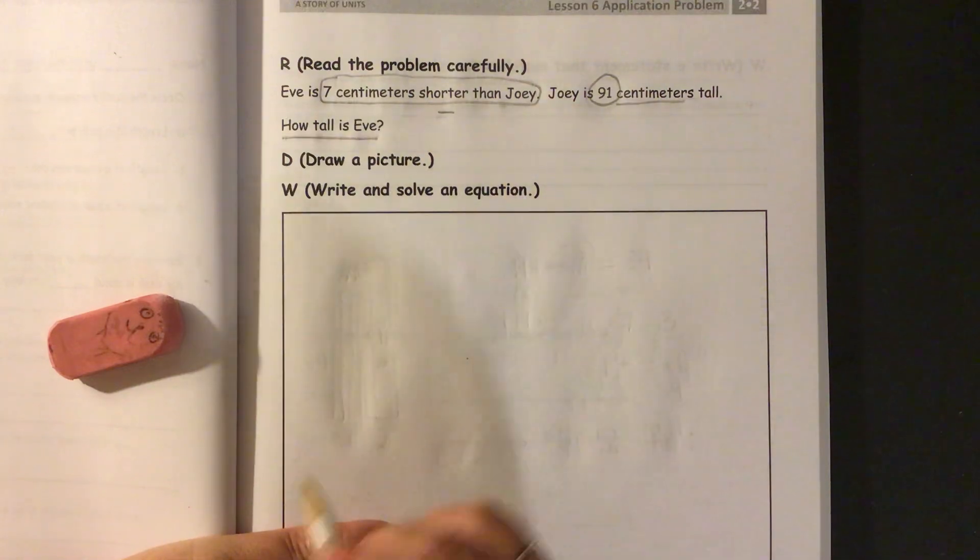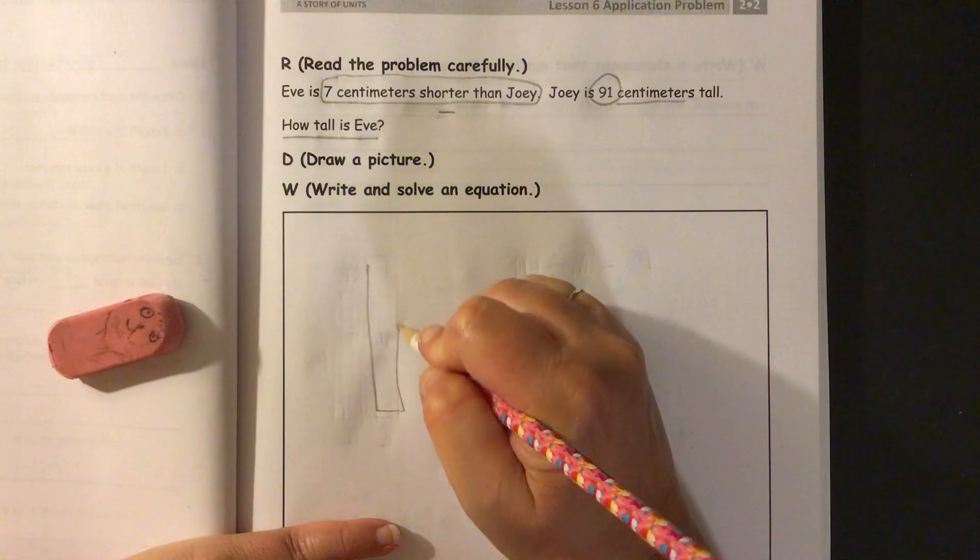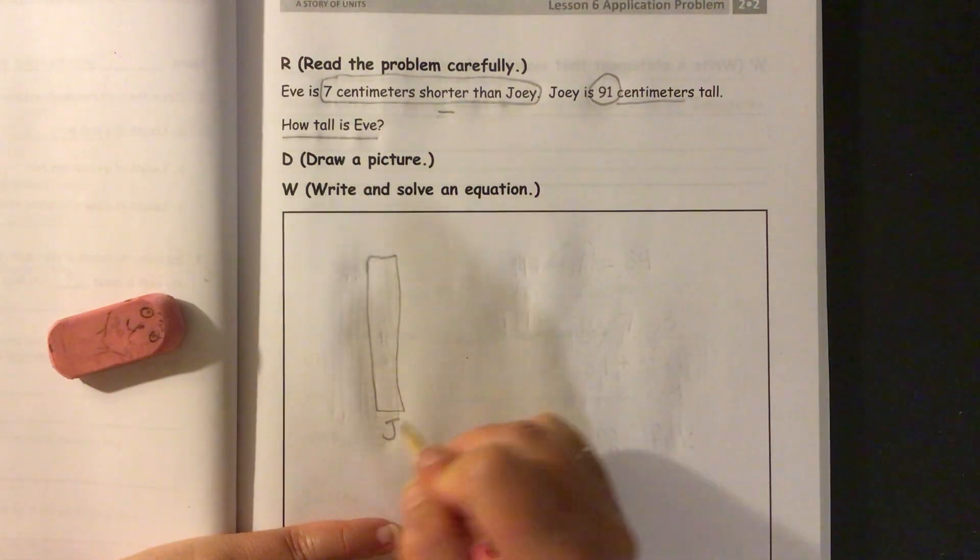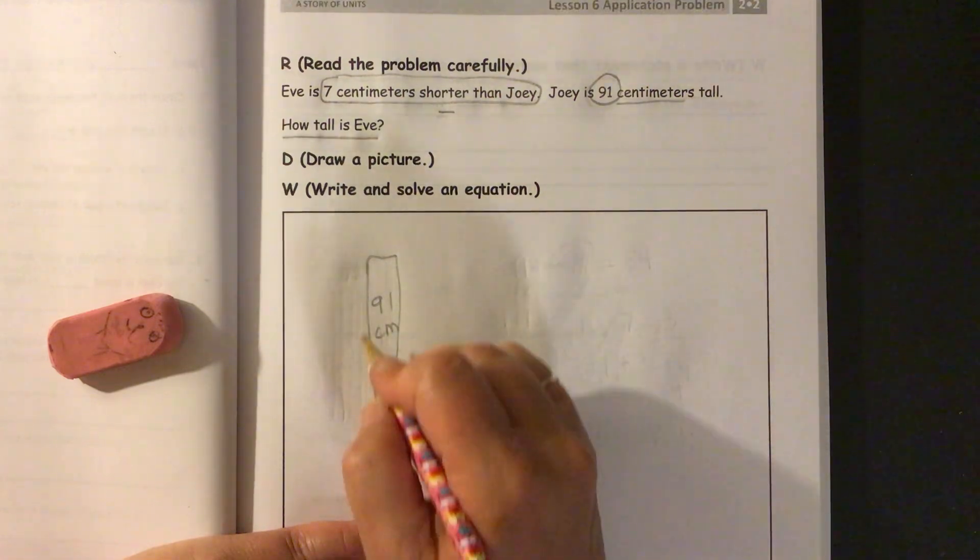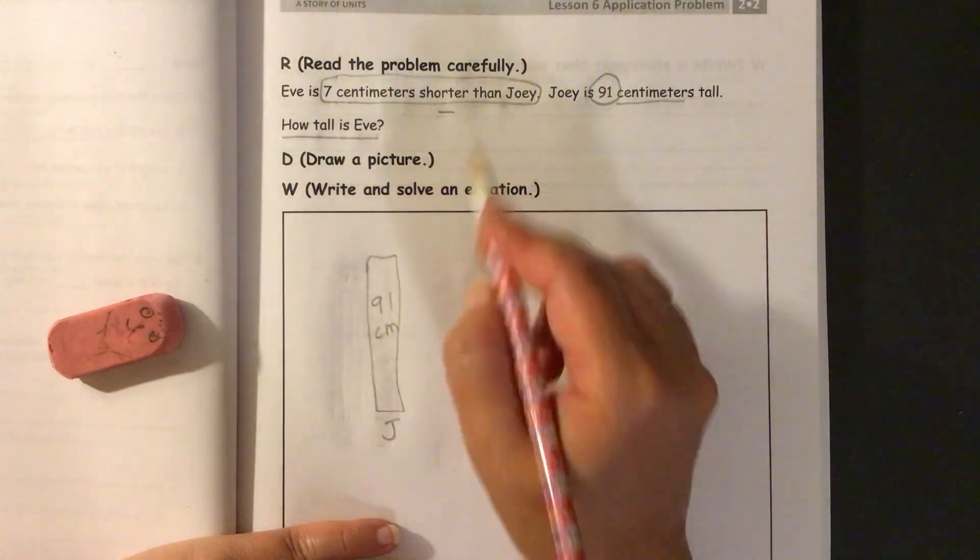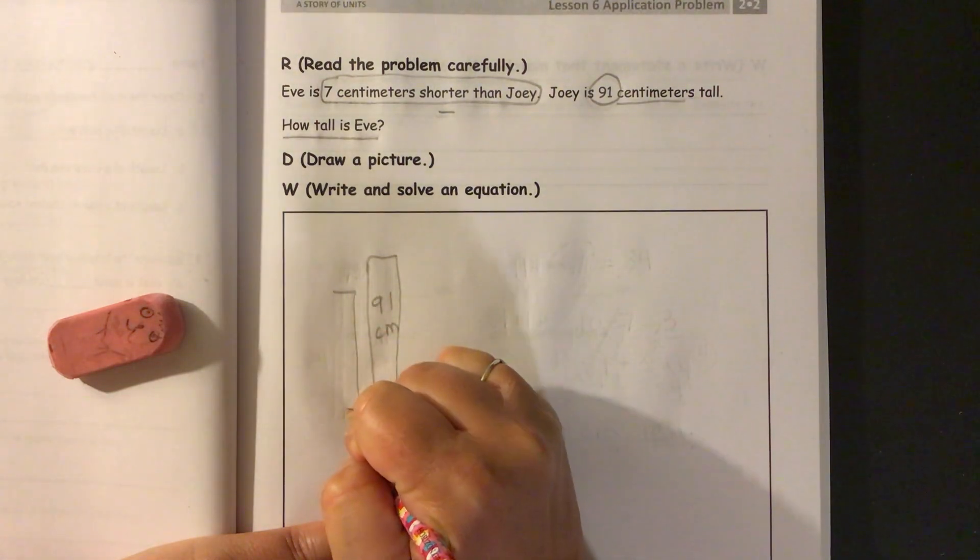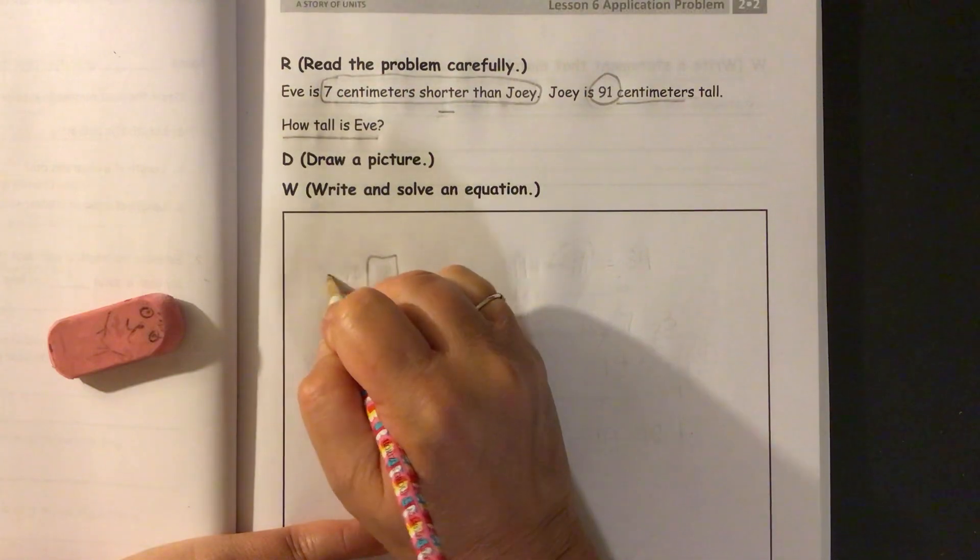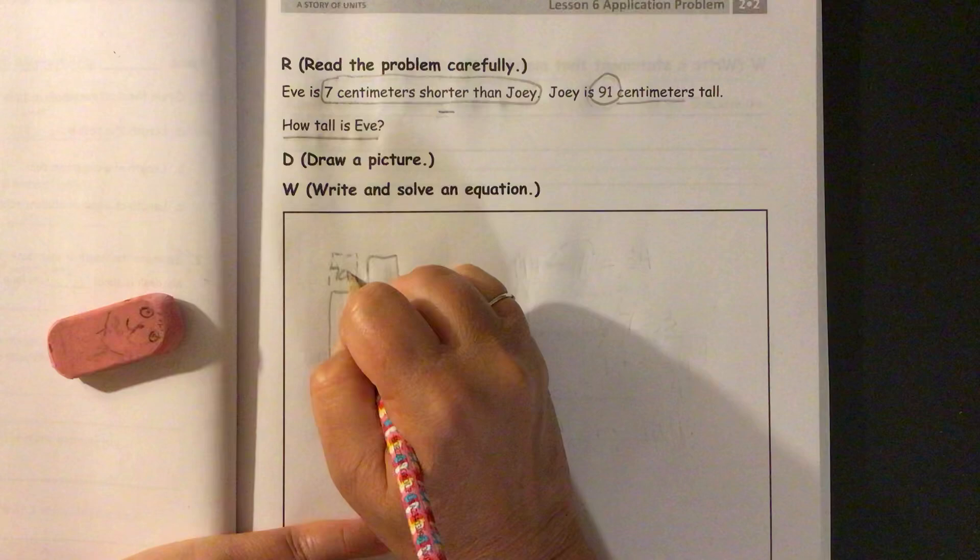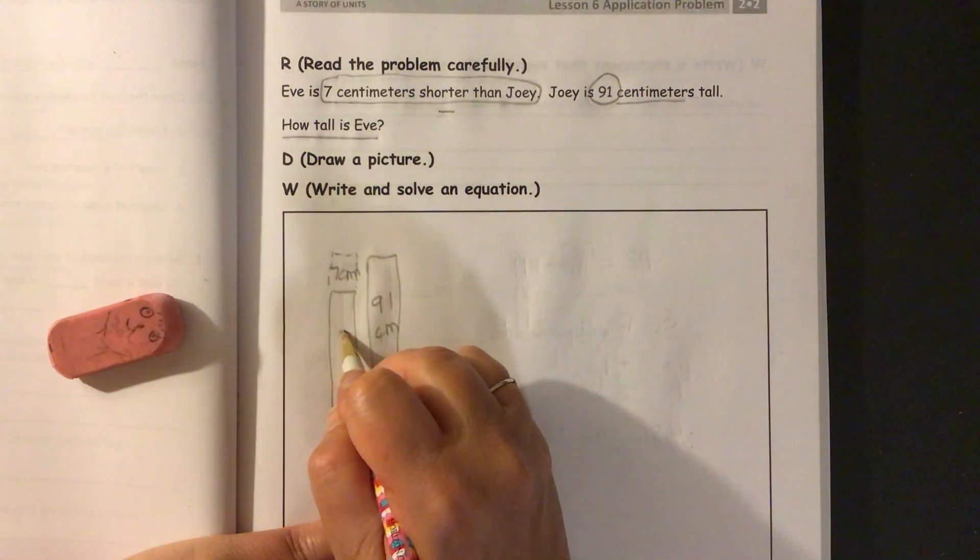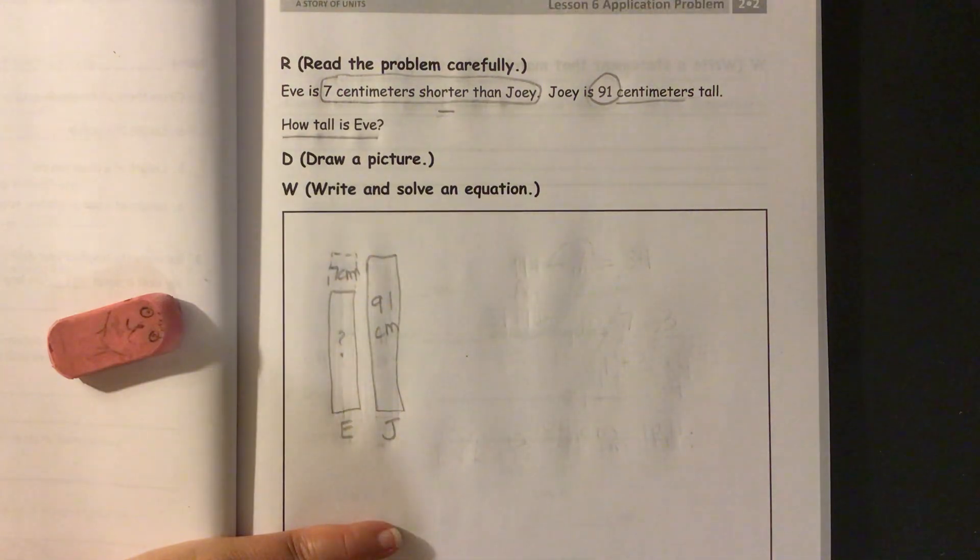So we need to draw a picture. We'll make it like they're standing up. Here's Joey at 91 centimeters tall. And then we know Eve is seven centimeters shorter than Joey. So I'll make Eve shorter and make some dots here. That's the seven centimeters that Joey's taller. We need to find out this amount, how tall Eve is.